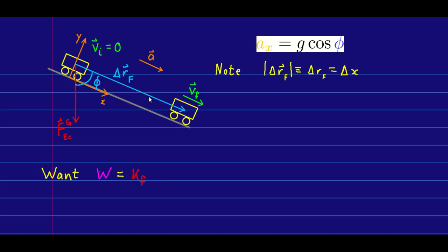Note that the force displacement vector r_f has a magnitude delta r_f, which equals the x component of the displacement of the cart. That will be useful as we go through the kinematics — all we have left is a bit of kinematics to write an expression for the final kinetic energy.